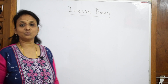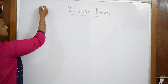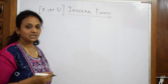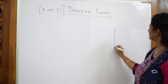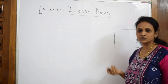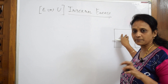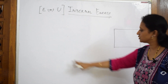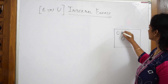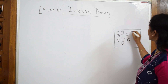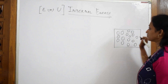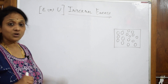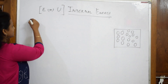Now we'll learn the concept of internal energy. In thermodynamics, internal energy is denoted by capital E or capital U. To understand this, suppose we have a system — the particular matter under study. This system contains a large number of molecules which are continuously colliding with each other. Let's write the definition.